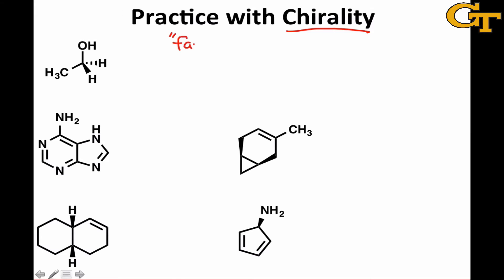The fail-safe method involves simply generating the mirror image of the structure and then trying our hardest to superimpose the two to see whether they are in fact the same structure or not. Since chirality is the property of being non-identical — being different from one's mirror image — we can also think of it as the property of having an enantiomer.